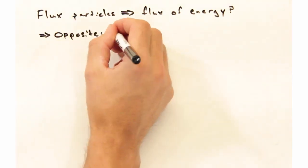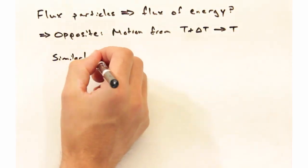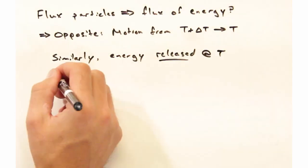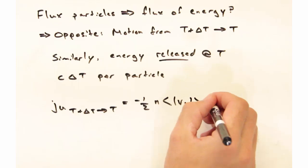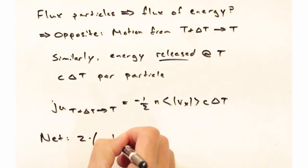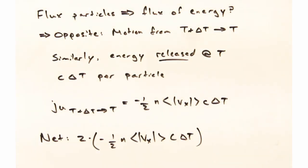For particle motion in the opposite direction, where a particle is at t plus delta t and it's going over into the colder t region, we're likewise going to find that energy is going to be released. That amount of energy released is c delta t. We can again write this same expression, and together we get this net expression at the bottom.